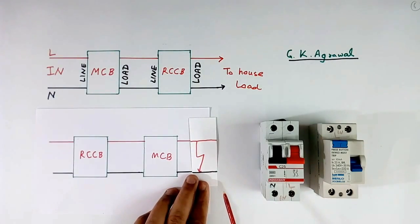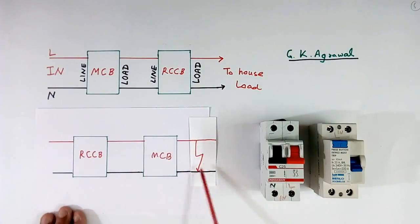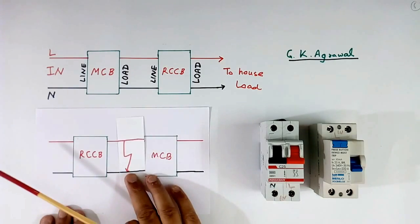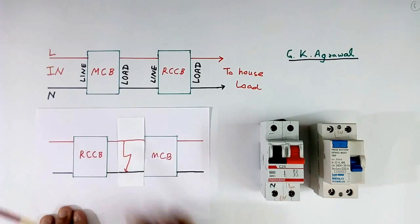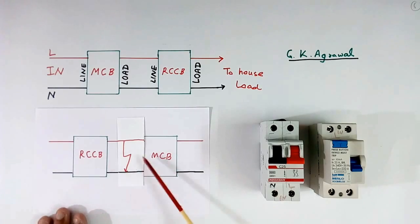But in this case, if fault happens here, then fault current will flow in MCB. It will protect. But if fault happens here, like this, so this fault current will not flow in MCB and MCB will not protect.